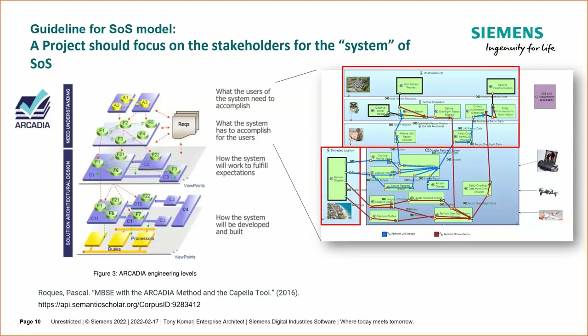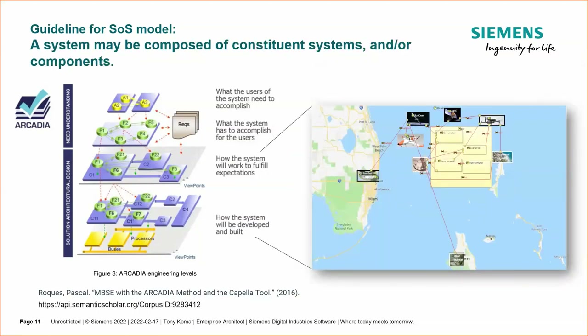Still in the system analysis phase, I move to the next guideline: the system may be composed of constituent systems and/or components. I use 'and/or components' because I'm trying to address this for the Internet of Things example also. We actually move to the logical architecture to show how the system would basically be built. I'm using the logical architecture and physical architecture to represent the constituent systems, and notably I'm not using operational analysis at all — the system analysis represents the system, and logical and physical represent the constituent systems.